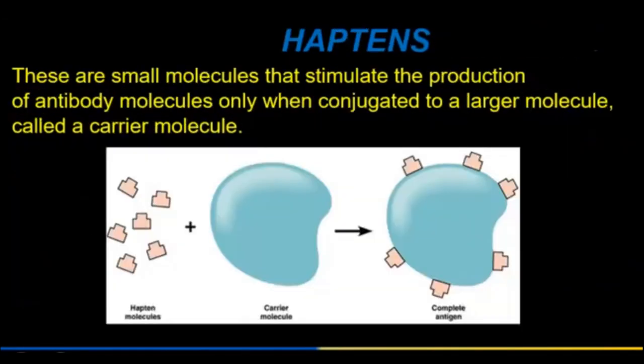Haptens are small molecules that stimulate the production of antibody molecules only when conjugated to a larger molecule called a carrier molecule.